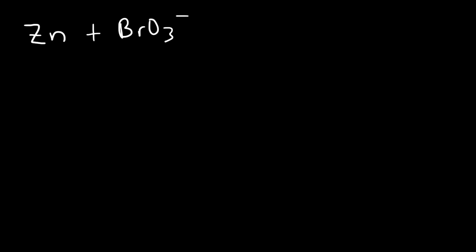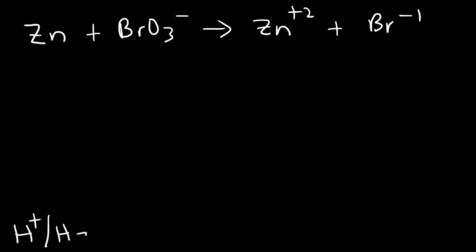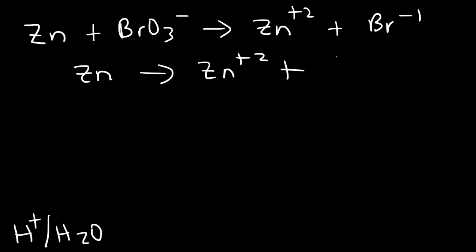Now let's move on to our next example. Zinc reacts with bromate to produce the zinc cation and bromide. Balance this reaction under acidic conditions. Under acidic conditions, you can add H⁺ and water to balance a half reaction. For the zinc half reaction, all we need to do is add two electrons: Zn → Zn²⁺ + 2e⁻.